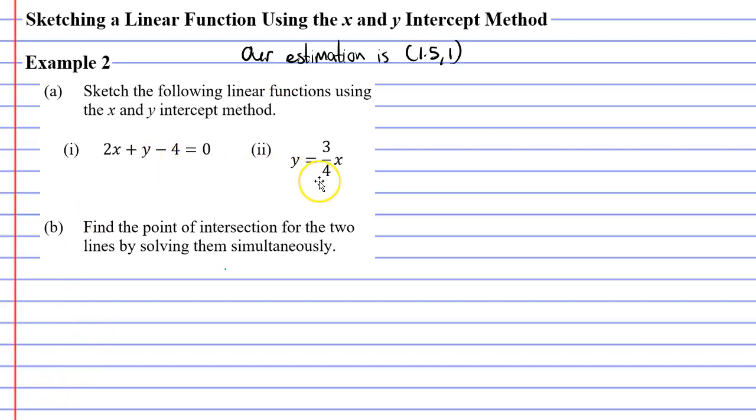Let's start with a blank slate and write down our estimation. How are we going to solve these equations simultaneously? I'll start by writing the first equation down: 2x plus y minus 4 equals 0. When we look at the second equation we can see that y equals 3/4 x. We can substitute 3/4 x in place of y here. This will give us 2x plus 3/4 x minus 4 equals 0.